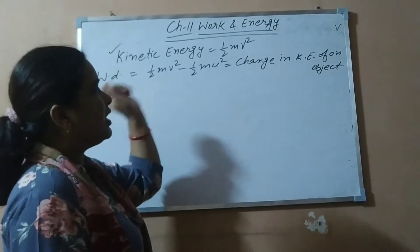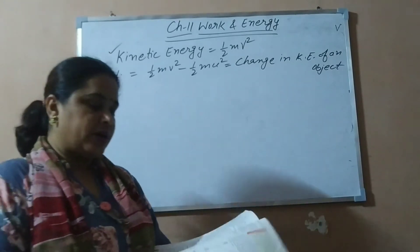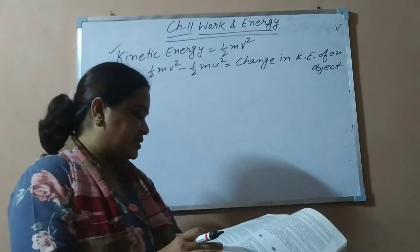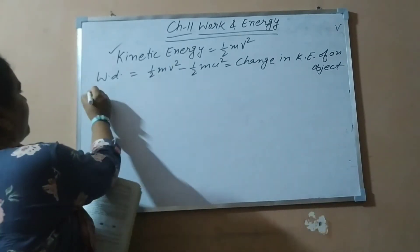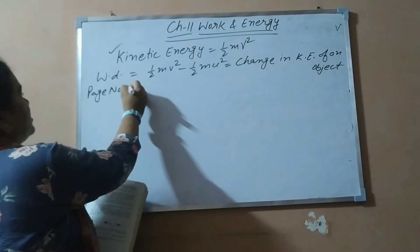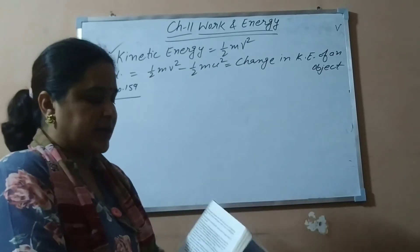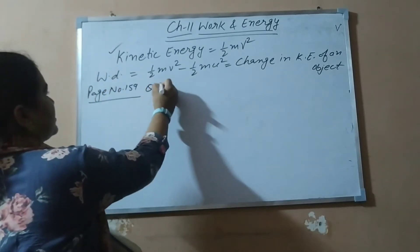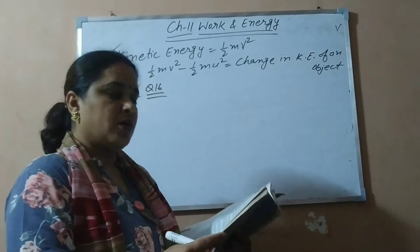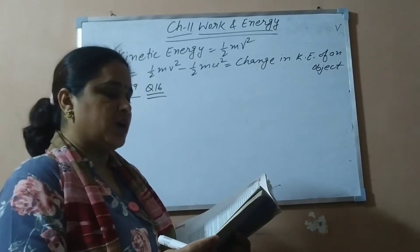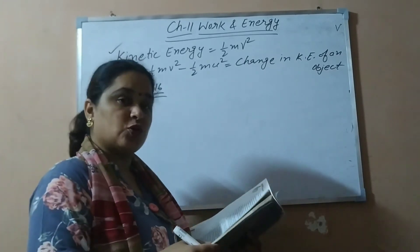Today we will discuss the other NCERT numericals. It is from your NCERT book on page number 159. You can see these numericals on page number 159. Question number 16 is related to this kinetic energy topic. What is given in the statement? An object of mass M moving with constant velocity V — how much work should be done on the object in order to bring it to rest?